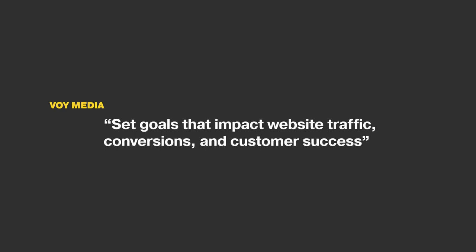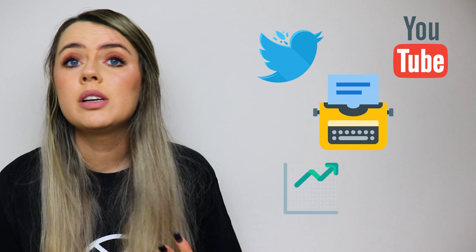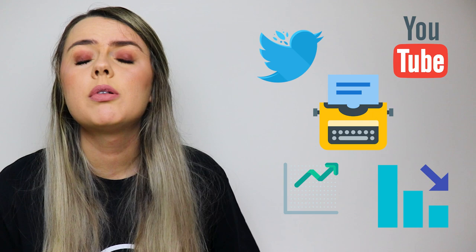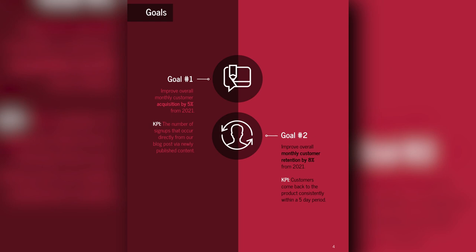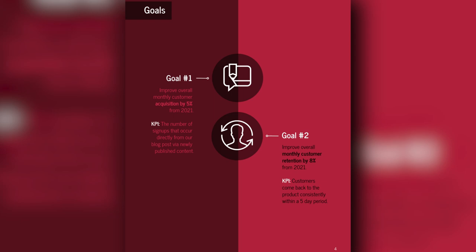Use real numbers. Avoid outlining vague goals like 'get more Twitter followers,' 'write more articles,' 'create more YouTube videos,' 'increase retention rate,' or 'decrease bounce rate.' Instead, identify key performance metrics you want to impact and the percentage you want to increase them by. Take a look at the goals page in the marketing plan example — they not only identify a specific metric in each of their goals, but they also set a timeline for when they will be increased.